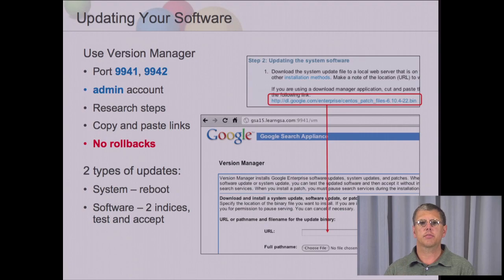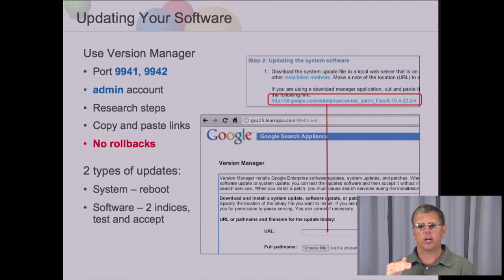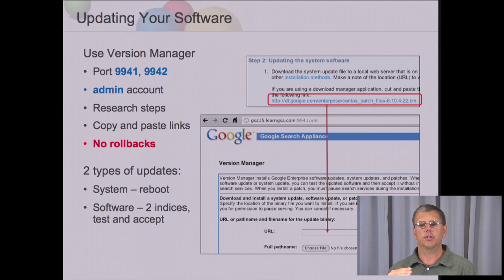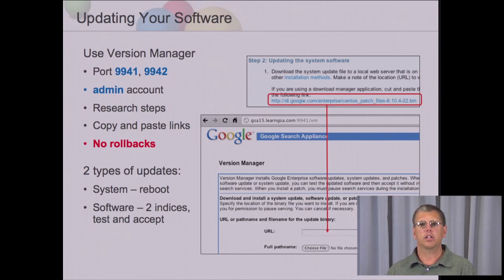What will happen is when you do a system software upgrade, paste the link in, the process starts and then you can check the checksum to make sure that all the software was downloaded. Then you click Continue and it'll ask you if you want to reboot the box now. There'll be a reboot process that occurs and you may experience 10 to 15 minutes of downtime. So if you're doing a system software update, you'll want to do that in the off hours. If you're using an application upgrade, then there's no reboot necessary. The index has to be migrated over to the new version.